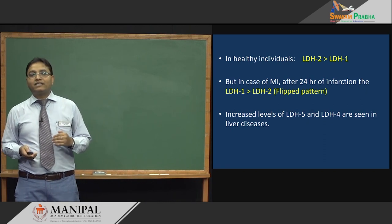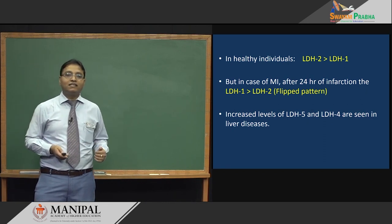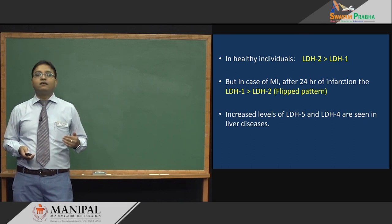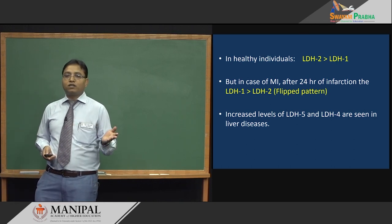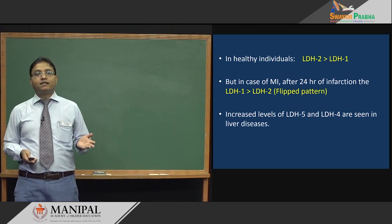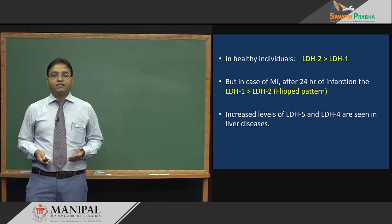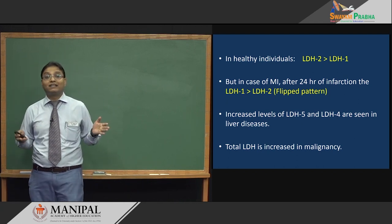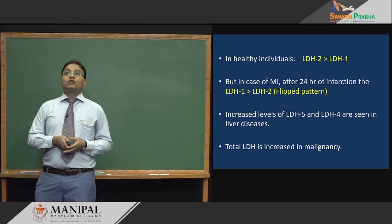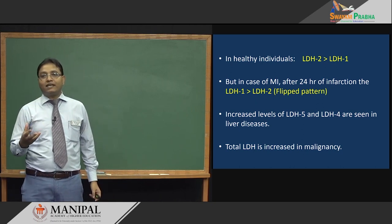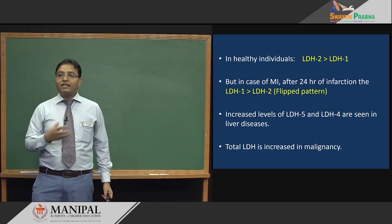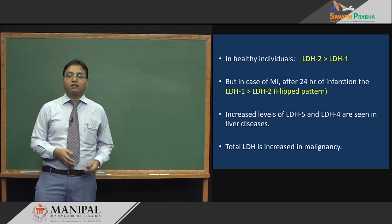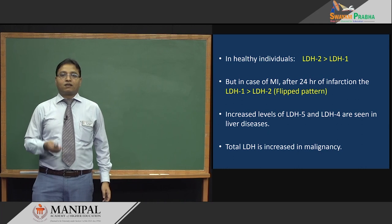Increased levels of LDH4 and LDH5 are seen in liver disease because both isoenzymes are located in the liver. When all isoenzymes of LDH are increased — called total LDH — this is seen in cases of malignancy.